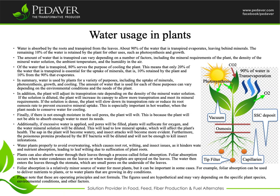Of the water that is transpired, 80% serves the purpose of cooling the plant. This means that only 20% of the water that is transpired is essential for the uptake of minerals — that is, 10% retained by the plant and 10% from the 90% that evaporates.